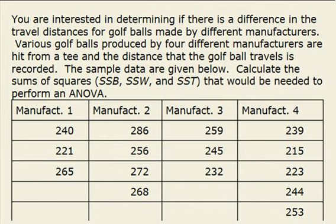We're interested in determining if there's a difference in the travel distances for golf balls that were made by different manufacturers, and what we have are data for four manufacturers. We want to use this data to find the sums of squares that we would need to perform an ANOVA.